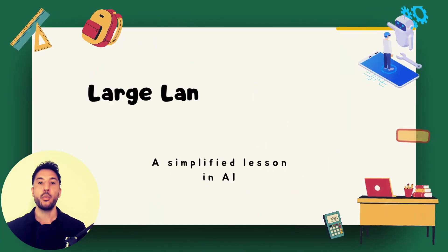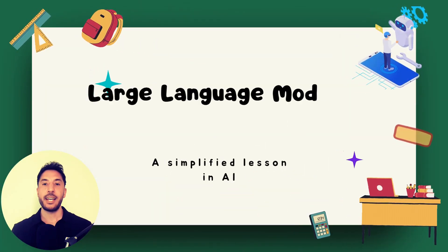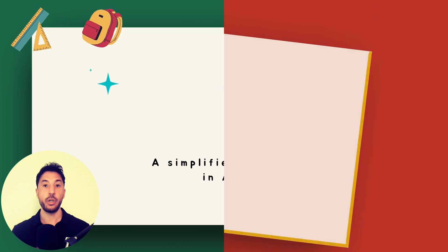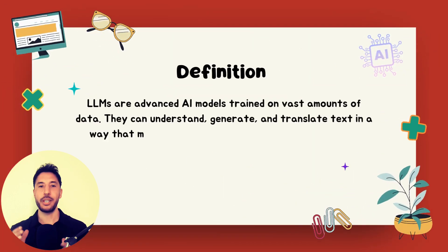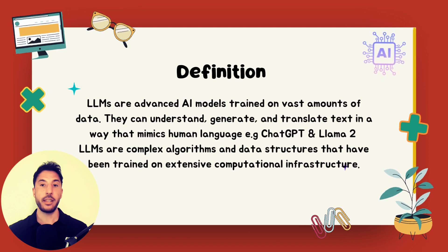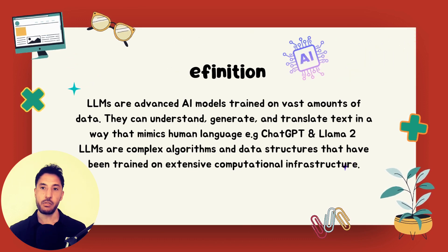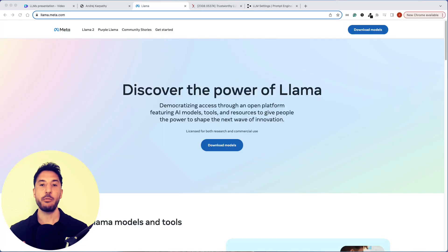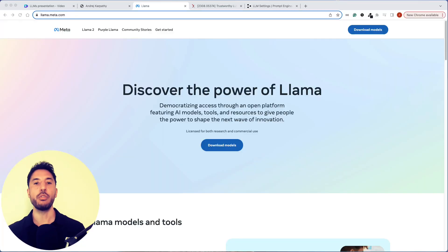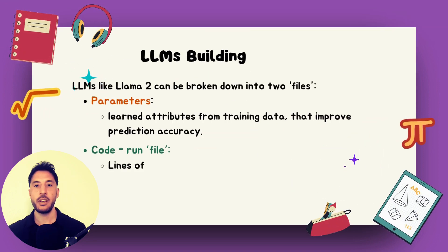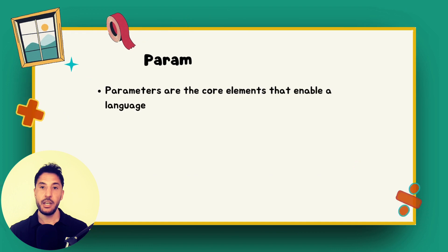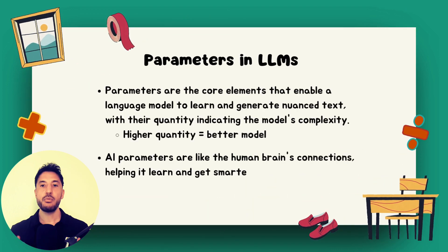In this short but concise video, we're going to break down and explain large language models in a very simple manner, whether you have a technical background or not. We'll take a look at the building blocks of large language models like parameters and run files, and how you can download a large language model like LLaMA 2 by Meta AI and run it on your own local machine and interact with it without the need for internet. We'll also compare LLaMA 2 and ChatGPT — the parameters and the nuances to understand the difference between them and how they work.